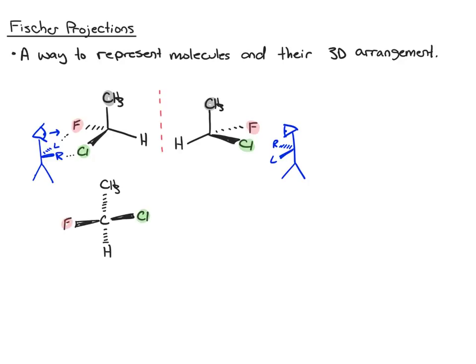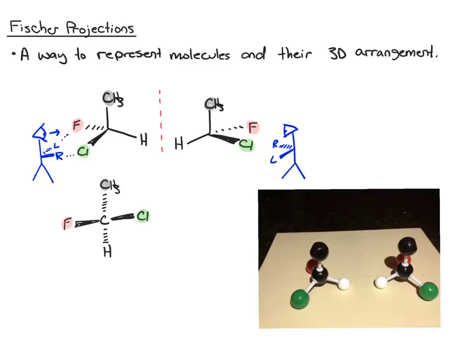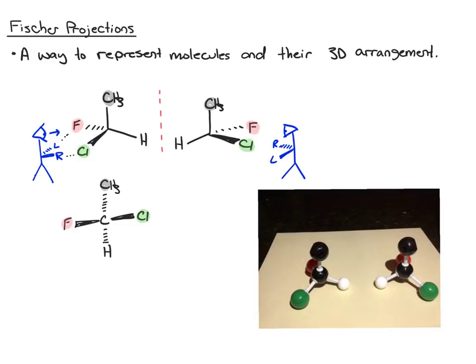Now before we go any further, I just want to mention how useful molecular models are when doing Fischer projections. I want to show you this molecule as a model and how we're viewing this Fischer projection. Here are two enantiomers, and we're focusing on the one on the left. From the front viewpoint, we have in the plane the hydrogen and the methyl group, the chlorine pointed out towards you, and the fluorine pointed away from you.